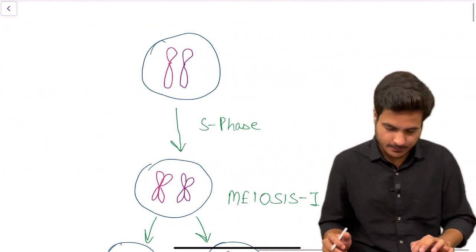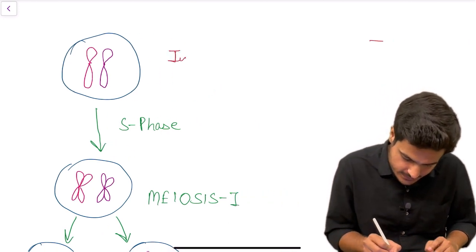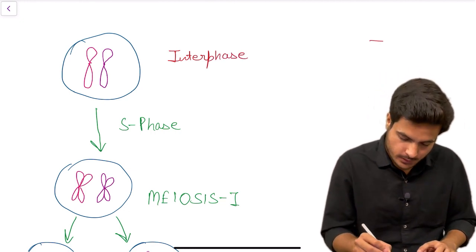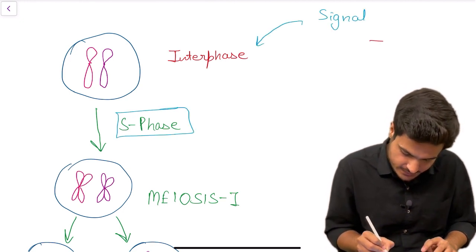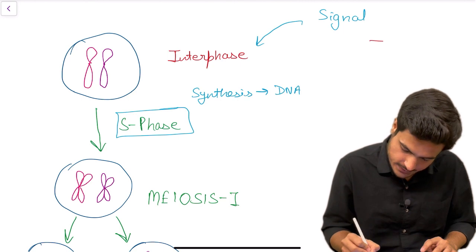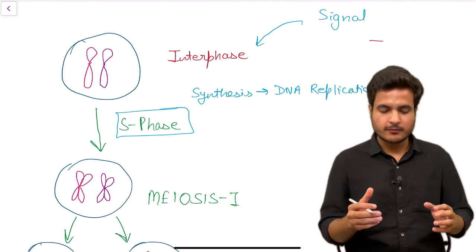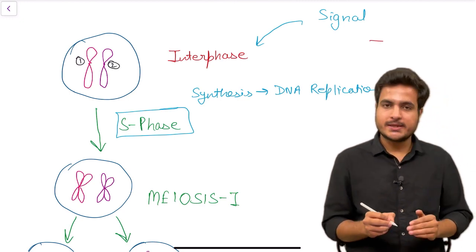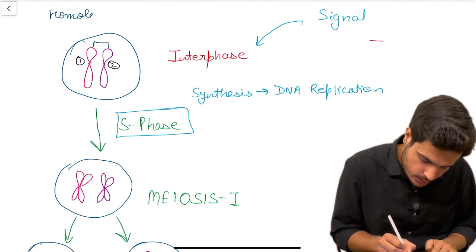Let me give you a brief idea of what is actually happening. When a cell is at rest we say it is in interphase, the resting phase. When a signal to divide comes, the cell enters the S phase of interphase — the synthesis phase — in which DNA replication occurs. Now let us look at the genetic framework of our cell: we have two chromosomes, one and two, equal in size and said to be a pair of homologous chromosomes.